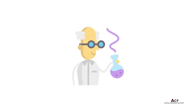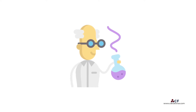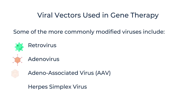There are many types of viruses that have been modified in the laboratory for use in gene therapy applications. Some of the more commonly modified viruses include retrovirus, adenovirus, adeno-associated virus (AAV), and herpes simplex virus. All these viruses differ in how well they transfer genes to the cells they recognize and are able to infect, and whether they alter the cell's DNA permanently or temporarily.